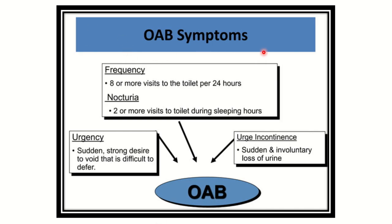Here we can see the overactive bladder symptoms and diagnostic criteria. Frequency is defined as 8 or more visits to the toilet per 24 hours, which is approximately every 3 hours. When a patient goes 8 or more times to the toilet for urination, it is called overactive bladder. Nocturia means 2 or more visits to the toilet during sleeping hours, which is also an overactive bladder symptom.